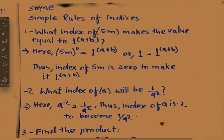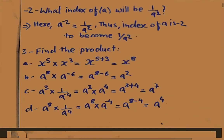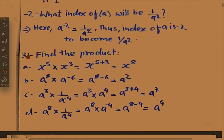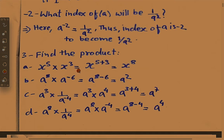Now let's find the product. For finding the product, a number is given: x power 5 into x power 3. Here the sign is multiplication, so the base is same. When the base is same in multiplication, the powers shall be added. So x power 5 plus 3 equals x power 8.